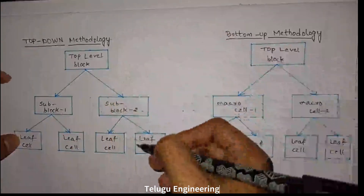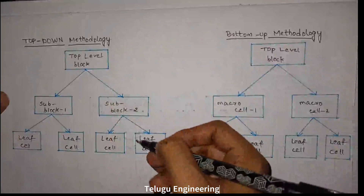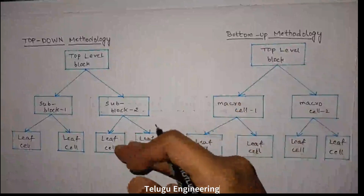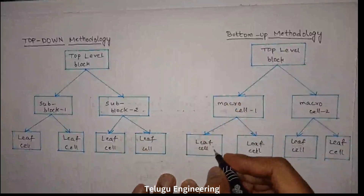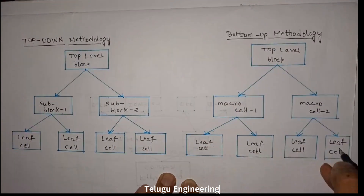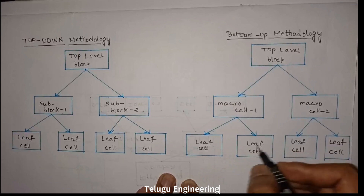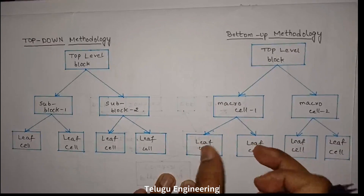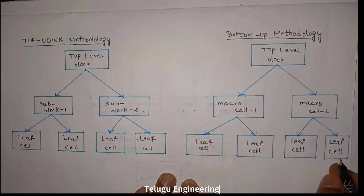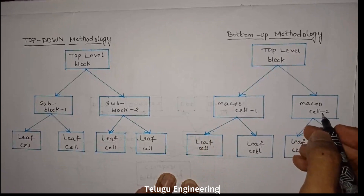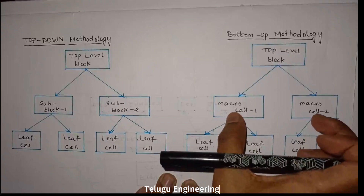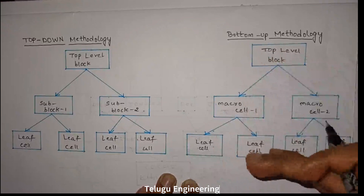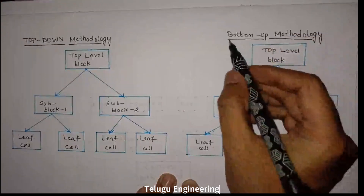Now for the bottom-up methodology, which is the reverse of top-down. First, we will define the leaf cells. If we combine two leaf cells, we will form macro cell 1. Using two other leaf cells, we will form macro cell 2. Then when we combine these two macro cells, we will form a top-level block. This is the bottom-up methodology, building from bottom to up.